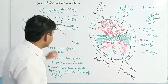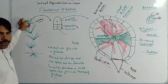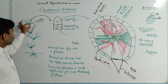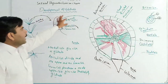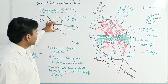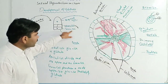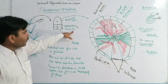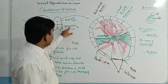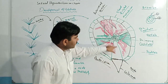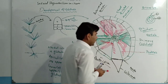How is the globule developed? This is the body of Chara, and this is the node. Nodal cells give rise to an apical cell. This apical cell divides and produces two cells: an upper cell and a lower cell. The lower cell gives rise to a node, and the upper cell gives rise to the stalk cell. The apical cell is still present undivided. Then this apical cell divides and produces eight cells.